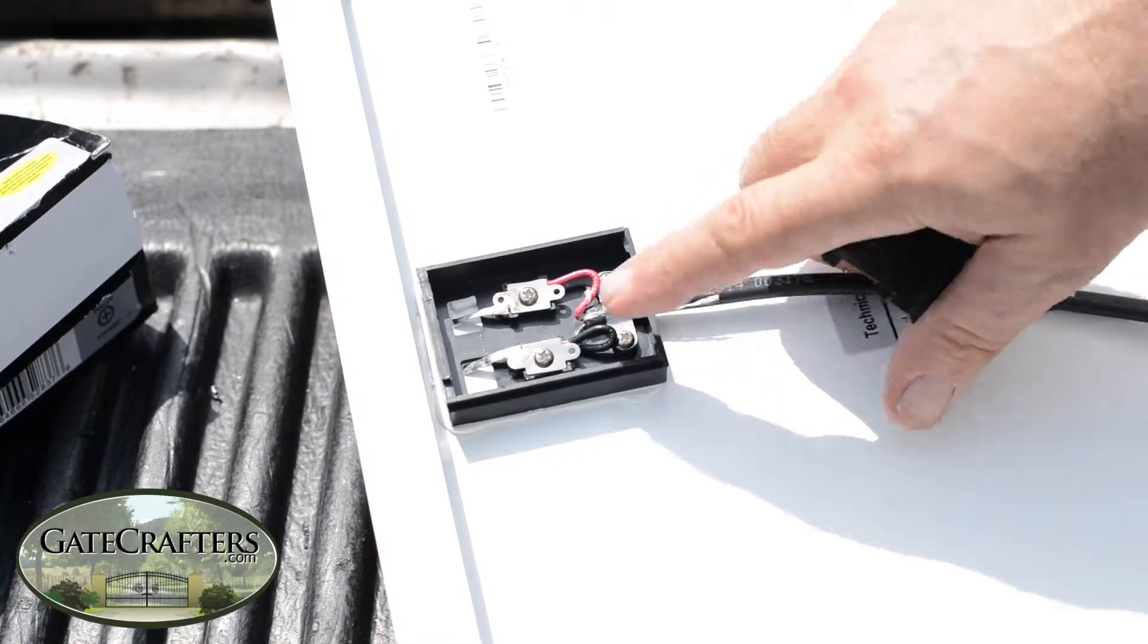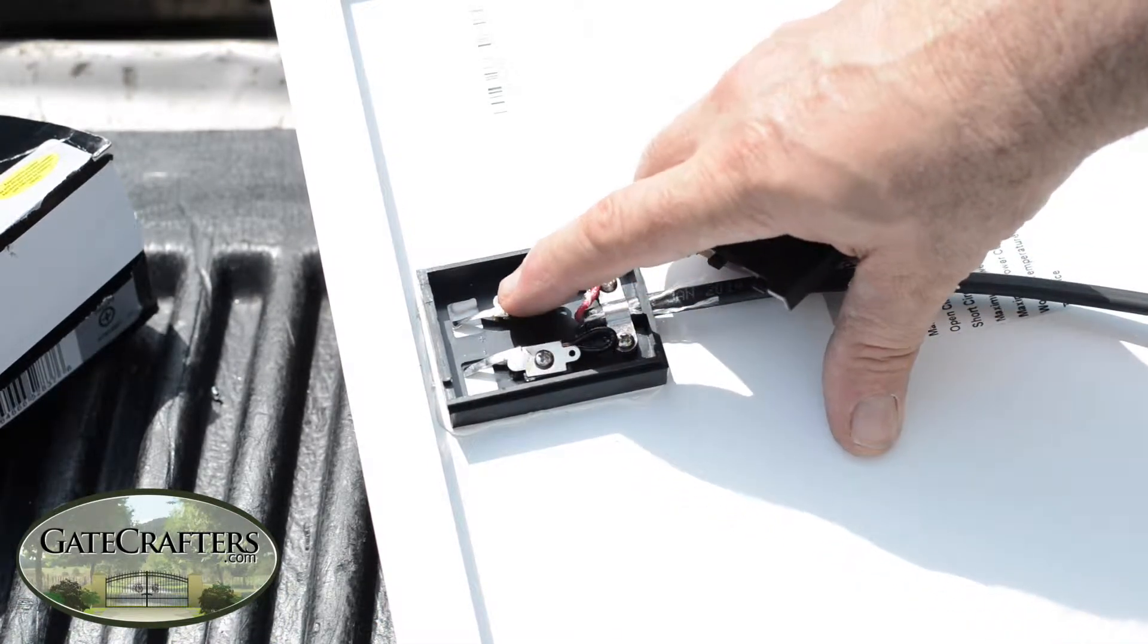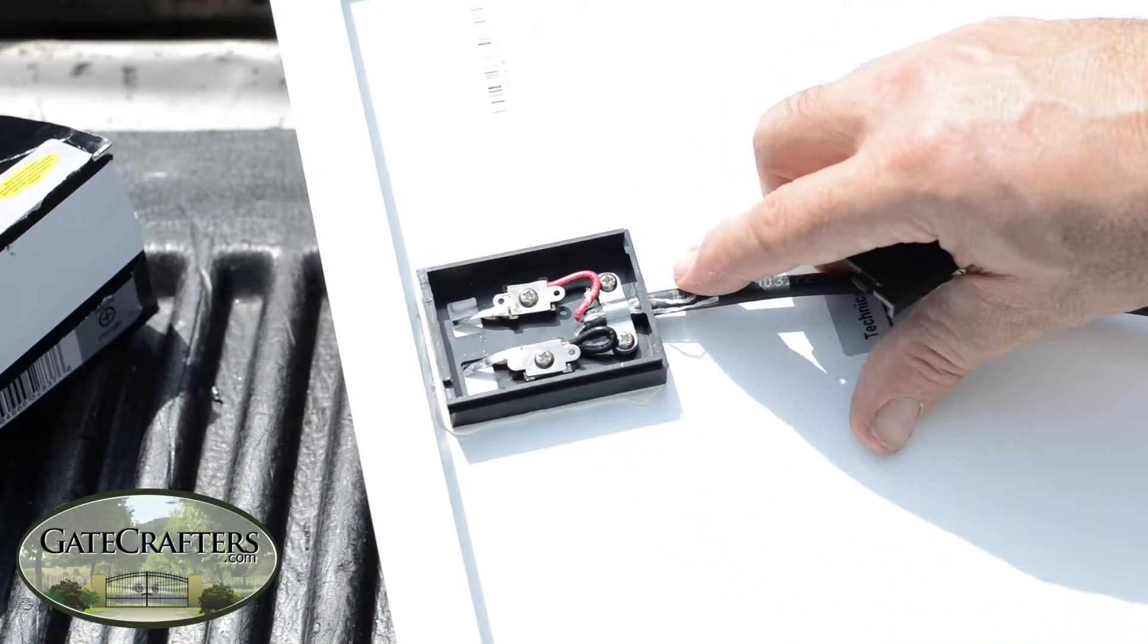Another call we get. It's very hard to see where the positive and negative are imprinted into the plastic here. But you can see there's a positive there and a negative there. Respect polarity when you're wiring it up.